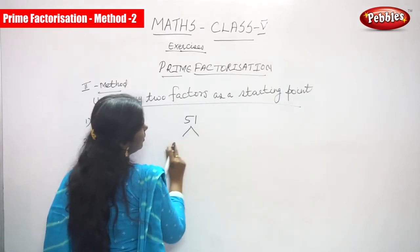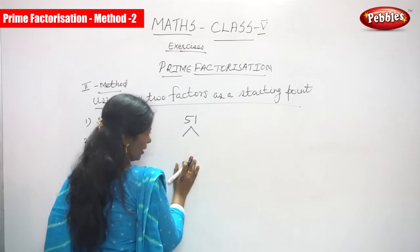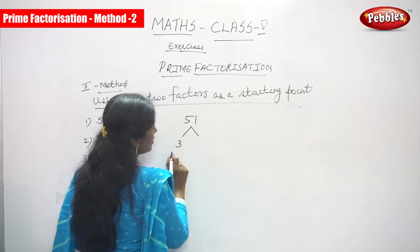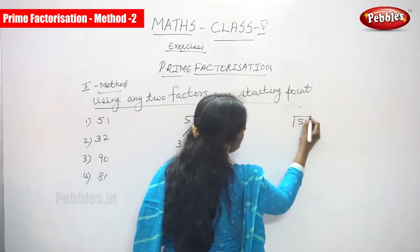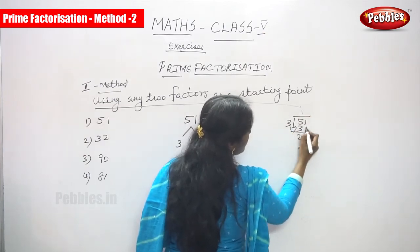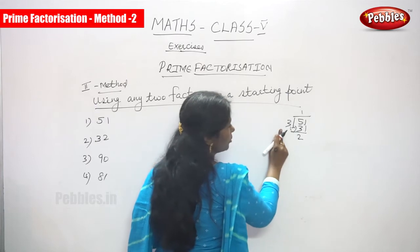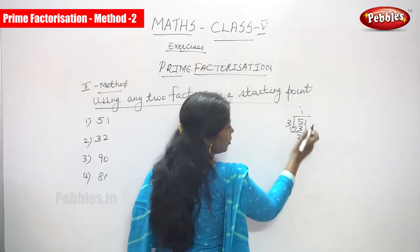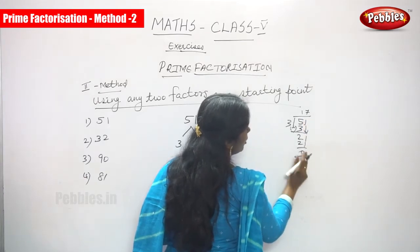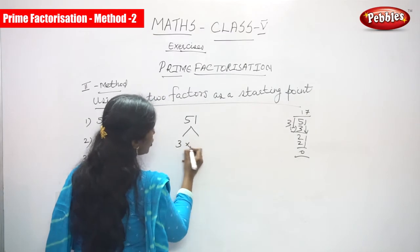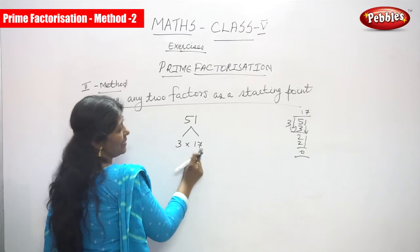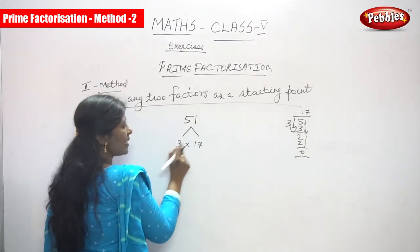We have to find the factors of 51. I have taken 3 as a factor, so 51 is divided by 3. One 3 is 3, 5 minus 3 gives 2, bring down the next digit 1, so 7 threes are 21, 21 minus 21 is zero. So 51 divided by 3 gives 17.